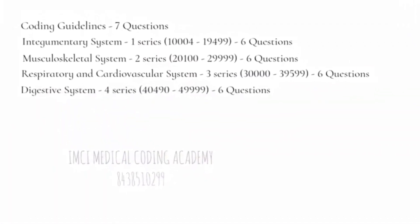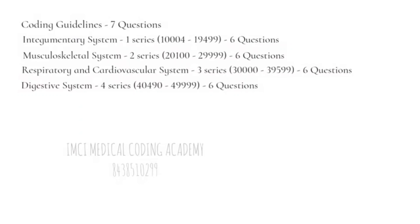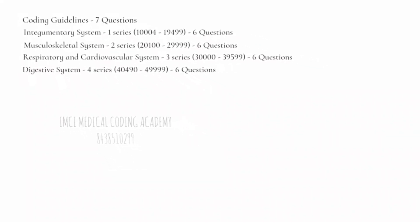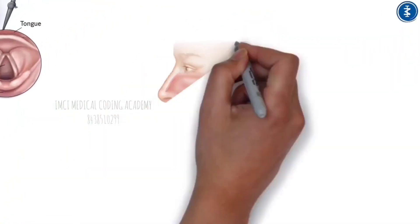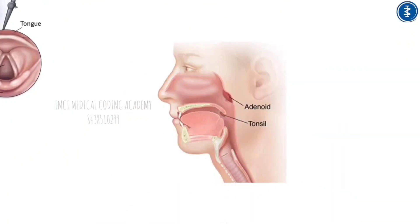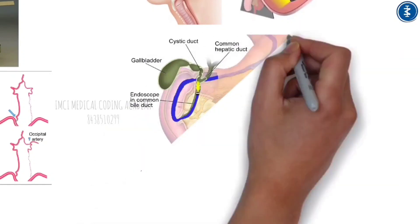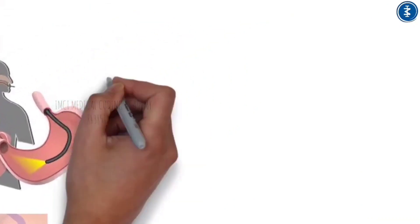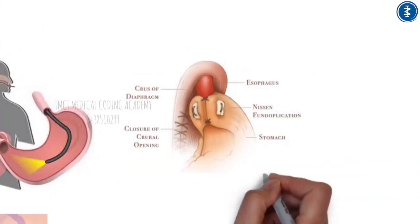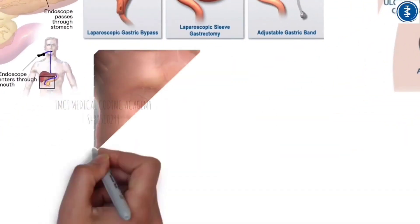The Digestive System (Chapter 4, codes 40490–49999) contributes 6 questions covering physician surgeries of the mouth, esophagus, stomach, and intestines. Procedures include tonsil and adenoid removal, esophagogastroduodenoscopy (EGD), endoscopic retrograde cholangiopancreatography (ERCP), fundoplasty, gastric bypass for morbid obesity, colonoscopy, sigmoidoscopy, and hernia repair.